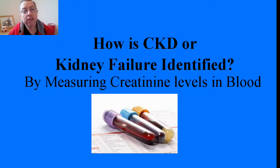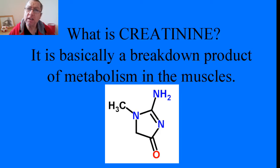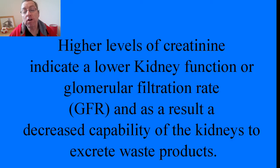Chronic kidney disease or kidney failure is usually identified by a blood test for a chemical substance called creatinine. Creatinine is basically the breakdown product of metabolism in the muscles. Higher levels of creatinine indicate a lower kidney function or glomerular filtration rate, GFR for short.